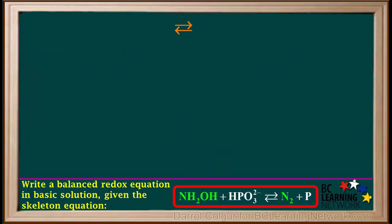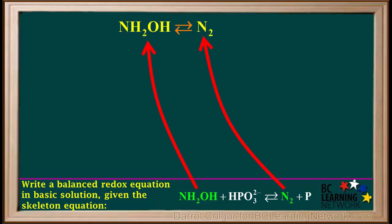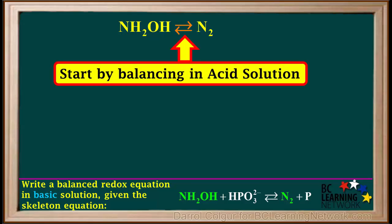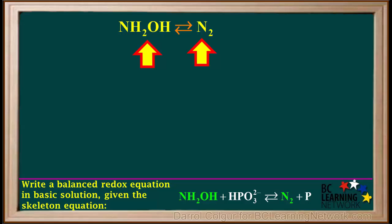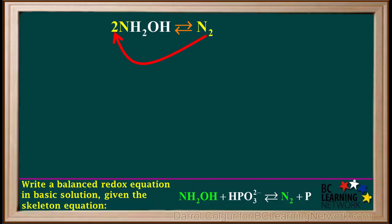We split this equation into two half-reactions. One is NH2OH forms N2. Even though we're asked to balance this in basic solution, we start by balancing the half-reactions in acid solution — we'll change it to basic at the end of the problem. We have NH2OH gives N2. We have one N atom on the left and two on the right, so we add a 2 here. Now we have two N atoms on both sides, so nitrogen is balanced.